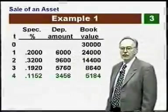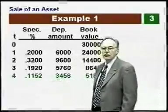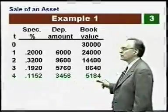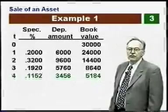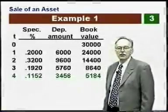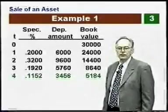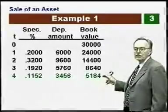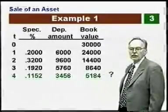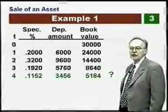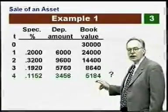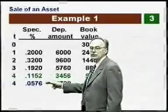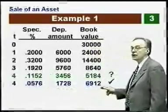Normally in year four, the specified percentage would be 0.1152. Applying that to $30,000 gives a depreciation of $3,456 and a book value of $5,184. But if we terminate the project in year four and sell the asset, a special condition must be imposed — we're only allowed half the depreciation. In the year of sale, if the sale is early — and for a five-year property class, any sale before the sixth year is premature — we cannot take the full year of depreciation. Conceptually, we're only allowed half a year, so the book value becomes $6,912.